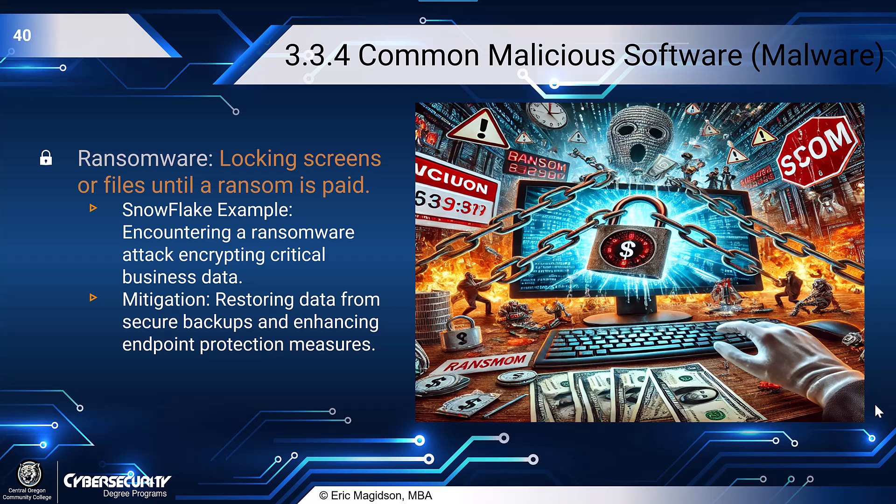Ransomware involves locking screens or files until a ransom is paid. In Snowflake's case, encountering a ransomware attack encrypting critical business data. That attack vector usually starts with an end user who clicks on something too good to be true, downloads malicious software, and a vulnerability in an unpatched operating system provides the mechanism for encryption, and systems start getting encrypted.